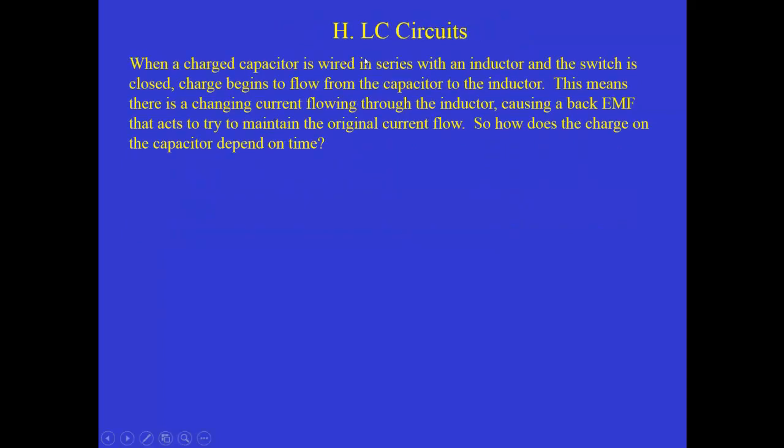So if a charged capacitor initially charged up is wired in series with an inductor, and then we close the switch, charge begins to flow from the capacitor to the inductor. That means there's a changing current flowing through the inductor, which then produces a back EMF that tries to maintain the original current flow. So let's look at this kind of a circuit and try to calculate how the charge on the capacitor depends on time. Initially, there's a charge Q on the capacitor plates because we've charged it up, and then we're going to close the switch, and so the charge will flow off of the capacitor plates and begin to flow through the inductor.